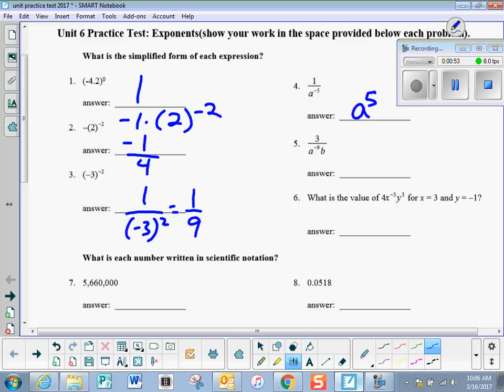On number 5, because this is negative, we have to move it to the numerator to make it positive, and then the b stays in the denominator because it did not have a negative exponent.